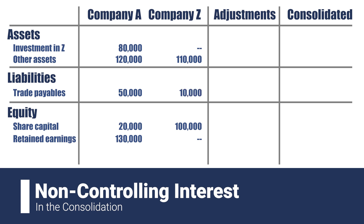Now, the procedures under IFRS tell us that all assets and liabilities need to be added 100% without consideration of the percentage owned by the parent. How do we do that while also considering the 20% not owned by A? The answer is through the non-controlling interest in equity.